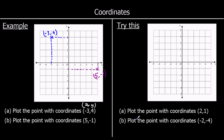Now 2 for you to try: plot the point with coordinates (2, 1) and plot the point with coordinates (negative 2, negative 4). So for (2, 1) — x first then y — 2 on the x and 1 on the y. And the second one: negative 2 on the x, negative 4 on the y.